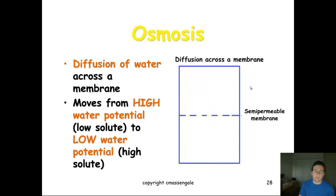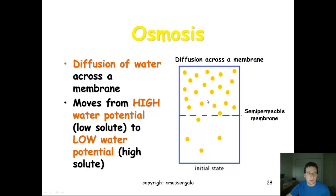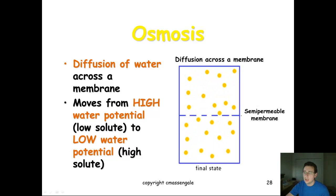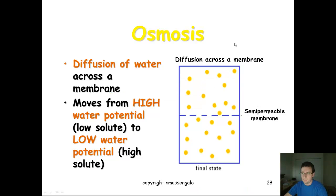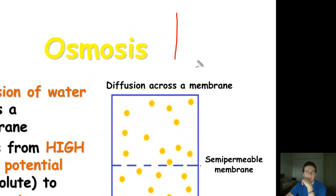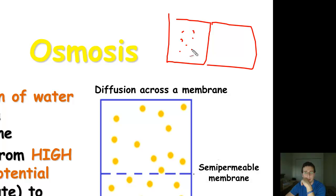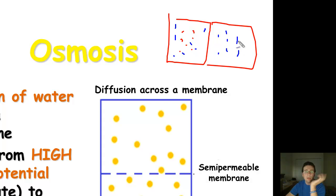Osmosis is basically the diffusion of water across a membrane. When water diffuses, the same thing happens — you have a lot of water molecules on one side and not as many on the other, so water moves from high water potential to low water potential. Water potential can be confusing, but think of it this way: if you have many solute particles on one side of the membrane, the water molecules on that side are busy dealing with all those solutes, while the water molecules on the other side are free and available.